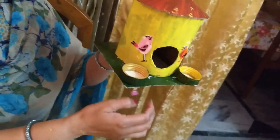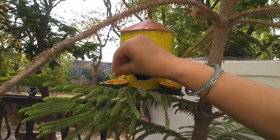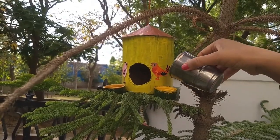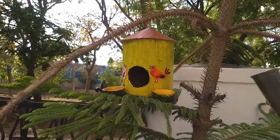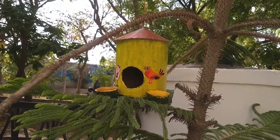Tie a small hanging at the bottom side like this. Bird shelter is ready. Keep the grains and water. You can hang on any tree like this. I hope you liked it. Thank you.